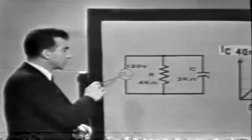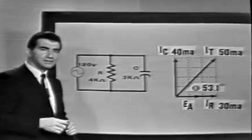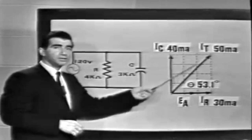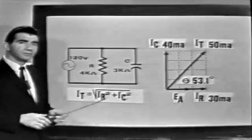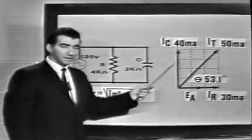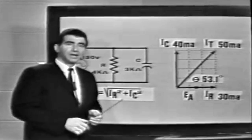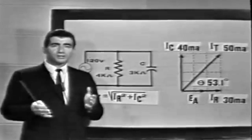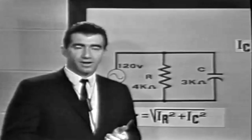Let's review the facts discussed. EA, the voltage applied, was used as the reference vector, and the phase difference was shown by branch currents IR and IC determined by Ohm's law. Approximate total current could be found by measuring the resultant vector graphically, or more accurately by using the Pythagorean theorem. Total impedance was found using Ohm's law. The phase angle can be determined by measuring the graph or more exactly by calculating the sine, cosine, or tangent of angle theta using trig tables. The phase angle indicates the power factor — the ratio of true power to apparent power. Know these facts well.